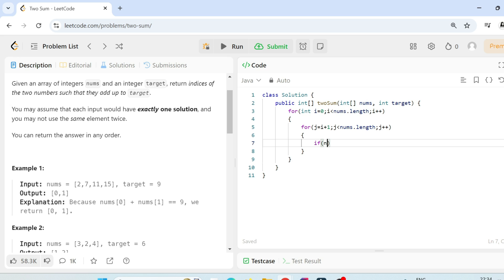Now we check. If. How to access elements. Name of the array. And then index. Plus. Nums of j. Equal to equal to. Whatever the target given. Here. Whatever the target is given. Equal to equal to this. Then. We store this i and j. In an array. And we return that array. Because this method is returning an array.